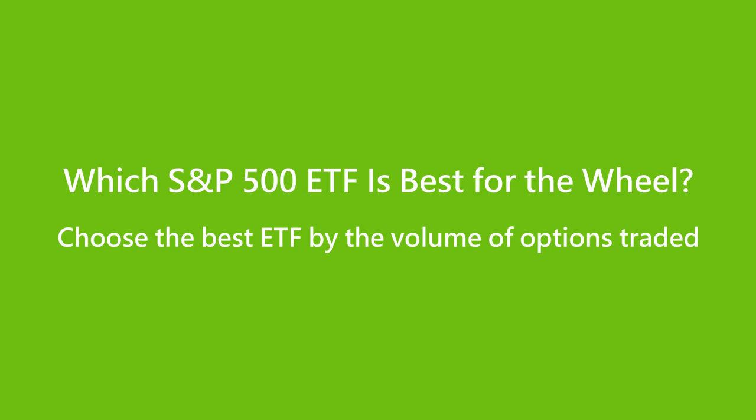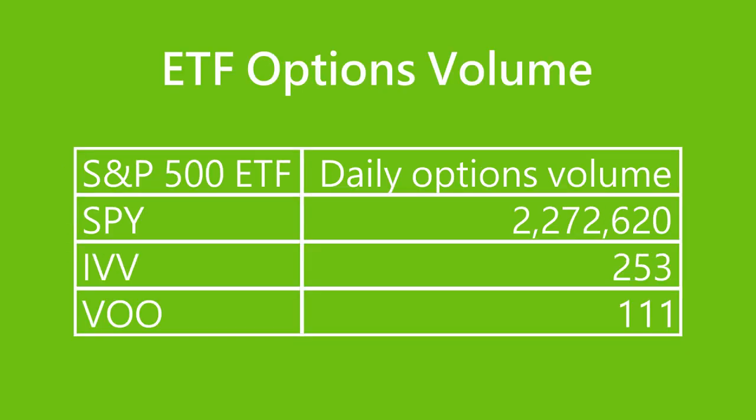There are three popular ETFs that track the S&P 500: SPY, IVV, and VOO. The three ETFs have different tracking accuracies and different management fees. Since the wheel strategy uses options to boost returns on investing in the underlying for the long term, we choose the best ETF by the volume of options traded. SPY has exponentially more options liquidity than the other two, so we will choose SPY as the symbol for trading the wheel strategy.